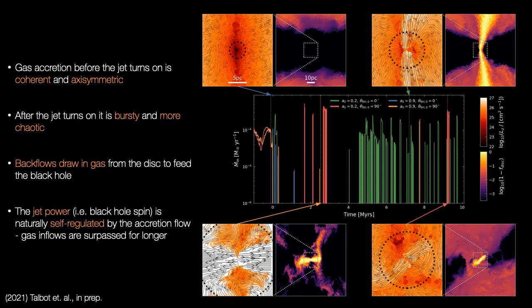We found that before jets are launched, the accretion from the circumnuclear disk is fairly coherent and axisymmetric. The jet initially cuts off inflow from the surroundings, but when it resumes, the inflow is much more bursty. We can also see that jet-driven backflows play an important role in the feeding process, with vortices funneling circumnuclear disk material towards the black hole.